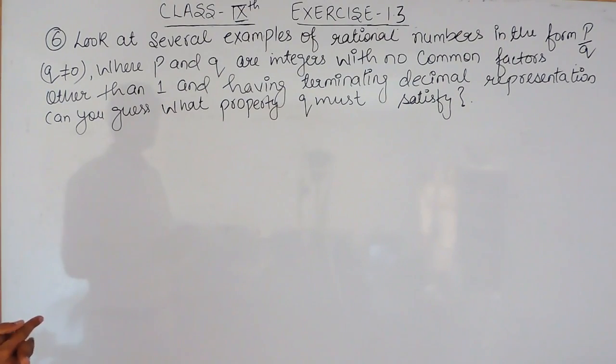look at several examples of rational numbers in the form of p upon q, where q must not be equal to 0 and where p and q are integers with no common factors other than 1 and having terminating decimal representations. Can you guess what property q must satisfy?